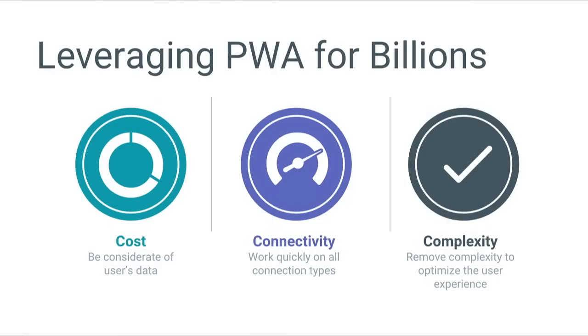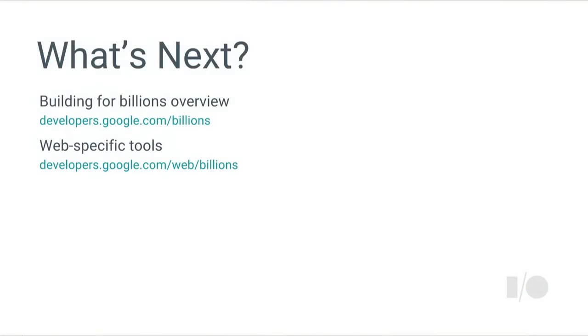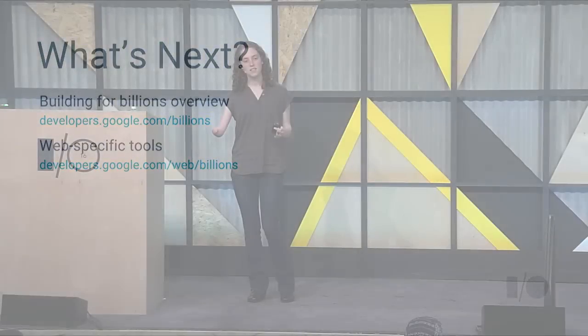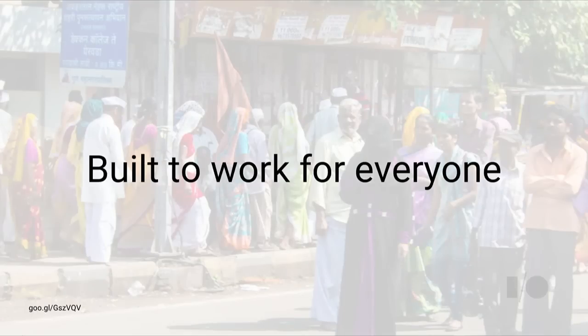Using all of these tools and technologies, you can use progressive web apps to remove barriers the web fundamentally offers, address cost and connectivity challenges, and remove complexity by eliminating unnecessary steps and page loads. This ensures your experience works not just for the 20% of US households relying solely on cellular data, but also for users coming online for the very first time anywhere in the world. You can build an experience that works for everyone. Thank you.